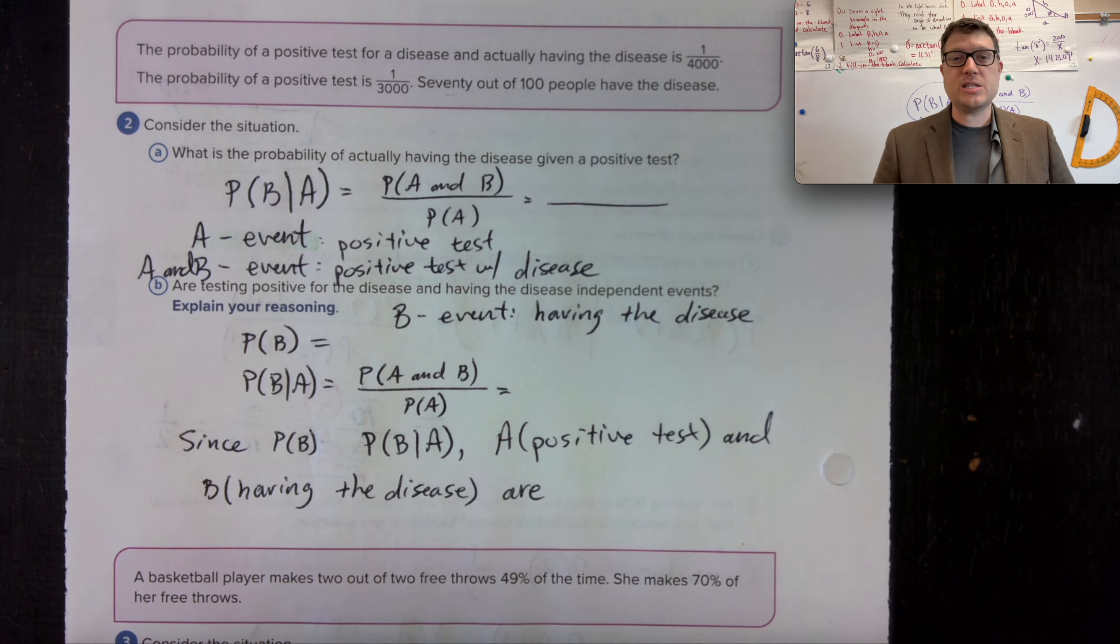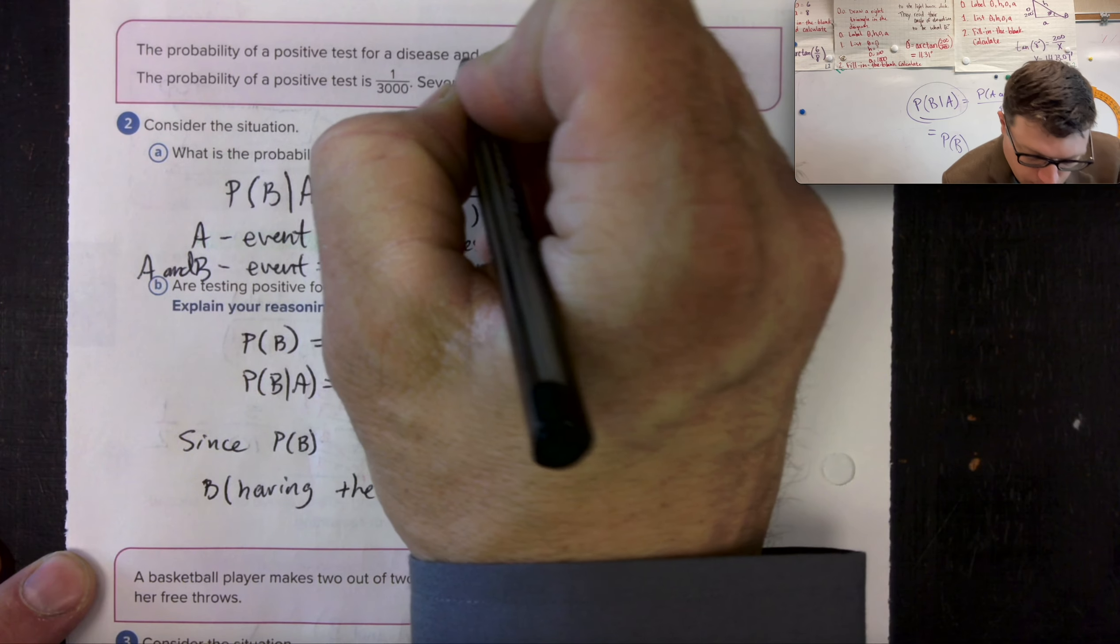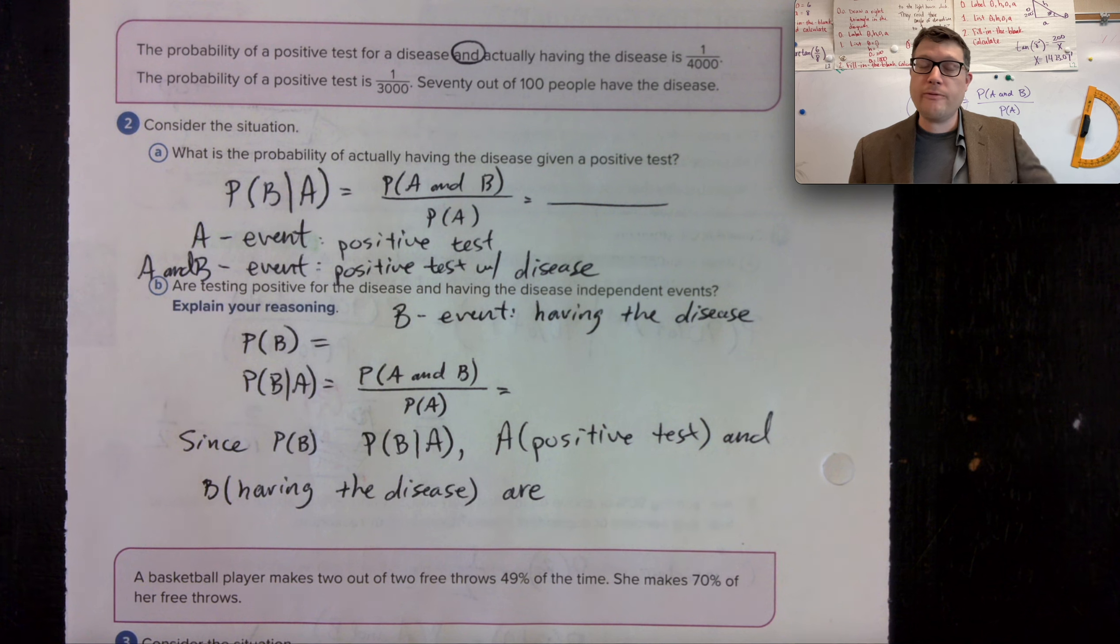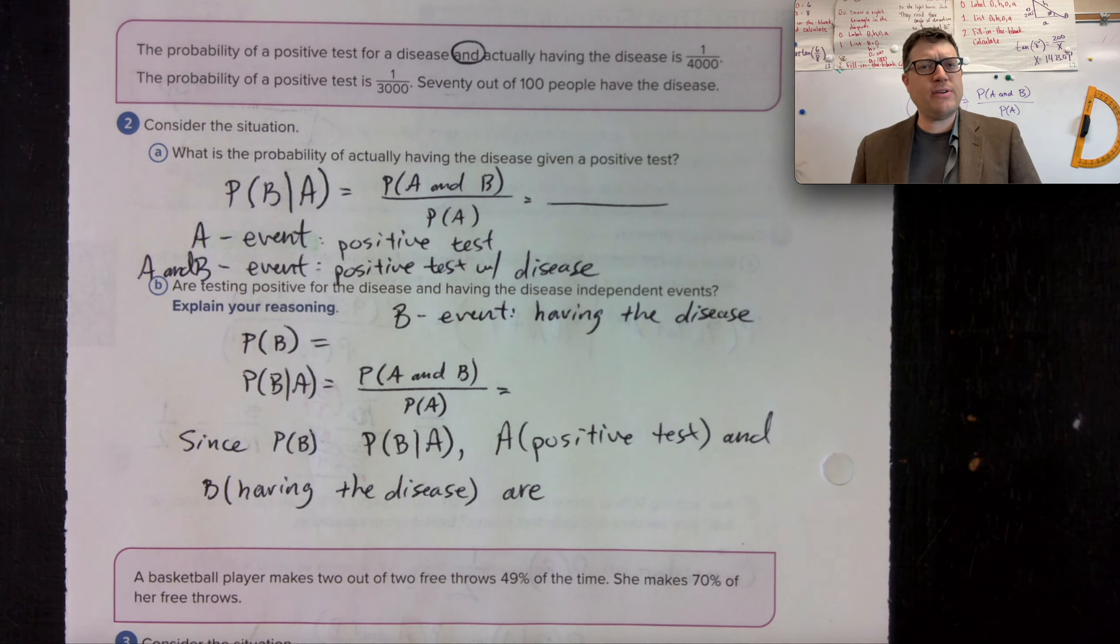The probability of a positive test for a disease and actually having the disease is one out of 4,000. The probability of a positive test is one out of 3,000. And then we can say 70 out of 100 people have the disease.